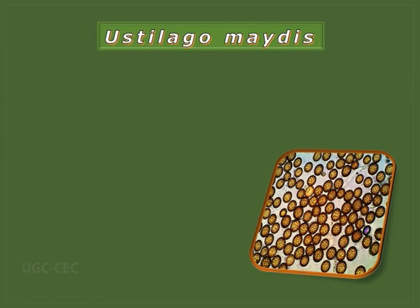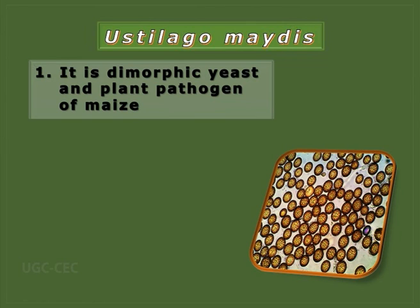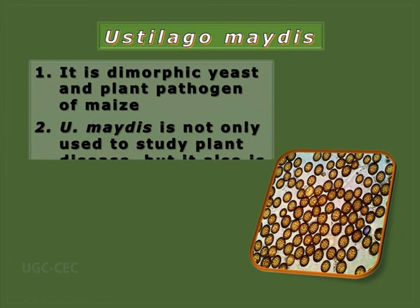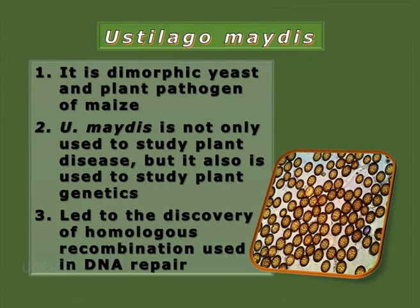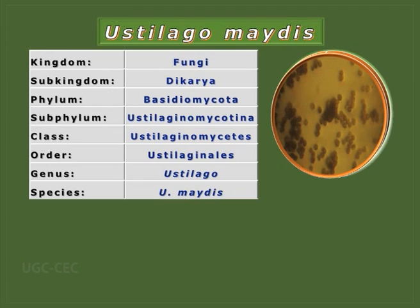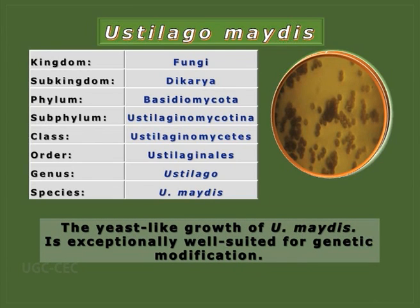The next member is Ustilago maydis. It is a dimorphic yeast and plant pathogen of maize. It is used not only to study plant diseases but also plant genetics. It led to the discovery of homologous recombination and DNA repair. It belongs to phylum Basidiomycota, class Ustilaginomycetes, order Ustilaginales, and genus Ustilago. The yeast-like growth of Ustilago maydis is exceptionally well studied for genetic modifications.